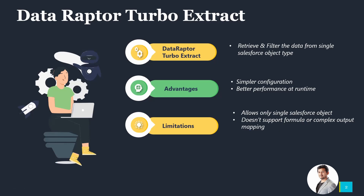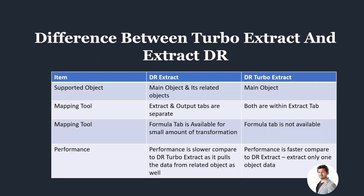Let's look at the differences between Dataraptive Turbo Extract and Dataraptive Extract. In terms of supported objects, Dataraptive Extract supports a main object as well as related objects, whereas Dataraptive Turbo Extract supports only one object at a time. In the mapping tool, Dataraptive Extract has separate Extract and Output tabs, whereas in Turbo Extract both are within the Extract tab.